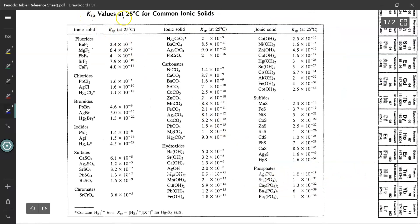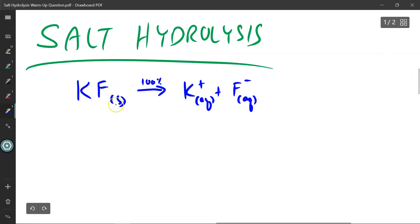Looking at our reference sheet for KSP values for fluorides, I don't see potassium fluoride on my list. Because potassium fluoride is not on my list, I can assume that it is 100% soluble. This list only deals with compounds that are insoluble. So when solid potassium fluoride is dissolved in water, 100% of it will dissociate into potassium ions and fluorine ions.